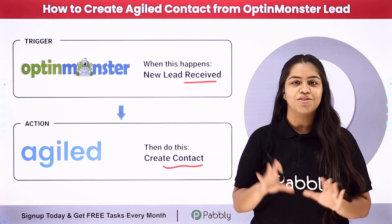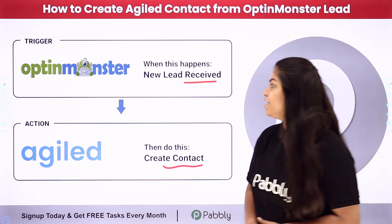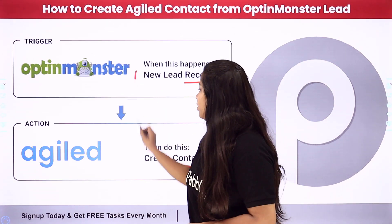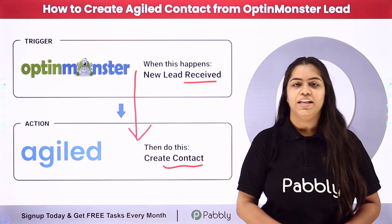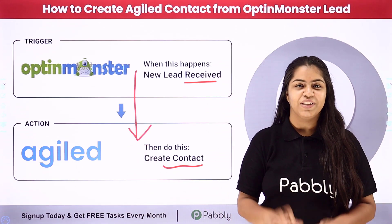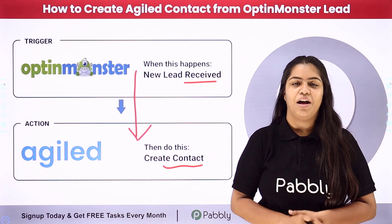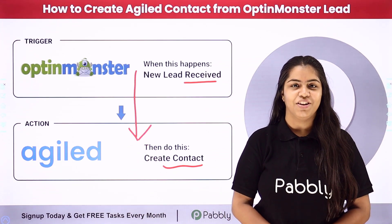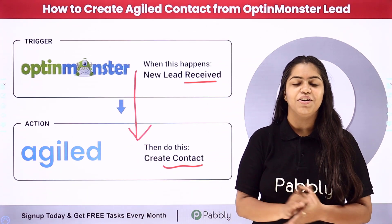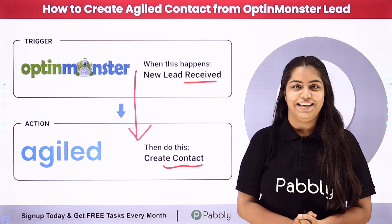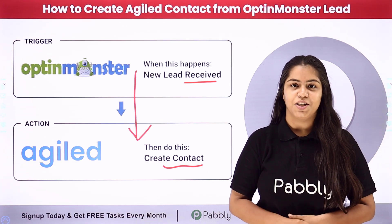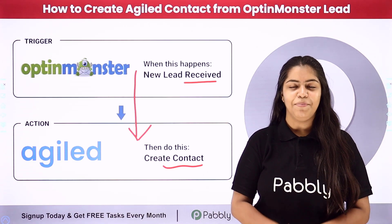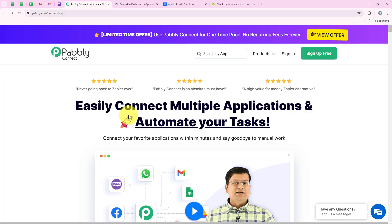To create this connection between OptinMonster and Agile, without knowing any programming or coding language, we are going to use Publi Connect. If you also wish to learn this process step by step, follow me through the screen.